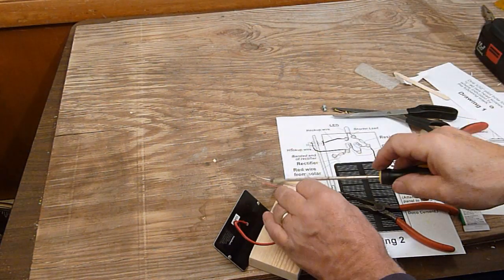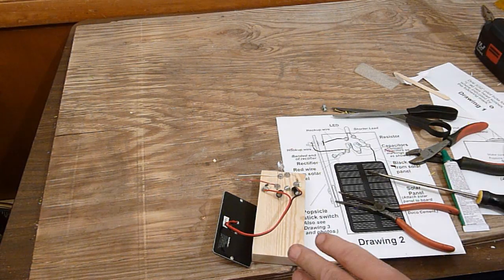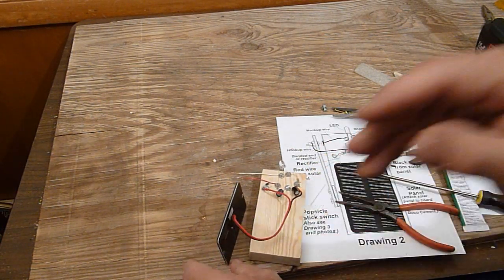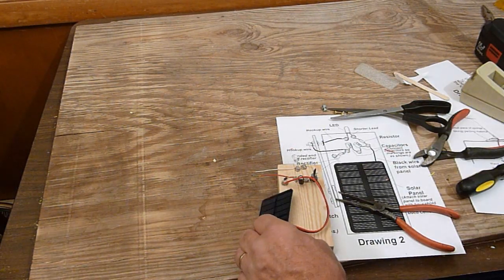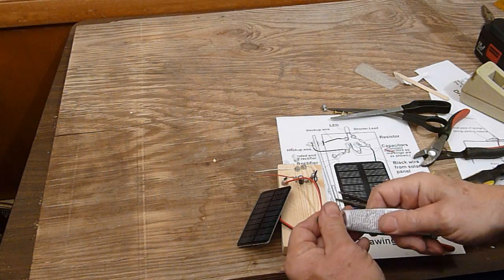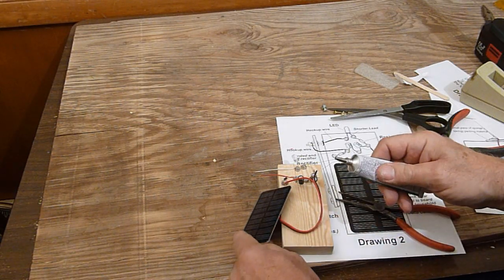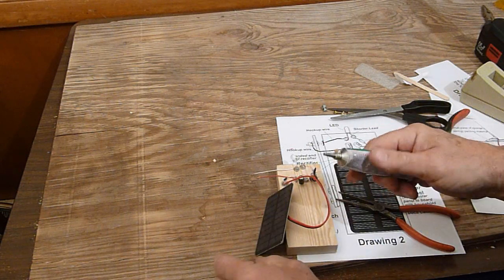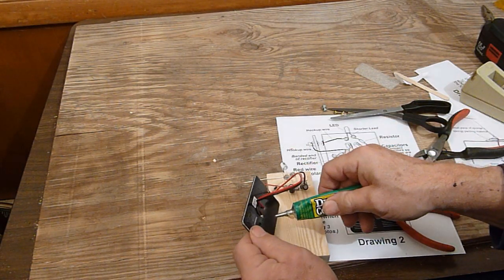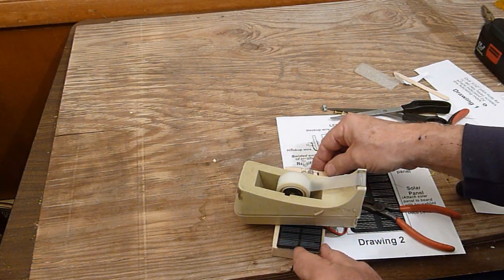The wiring is done except for this popsicle stick switch. Now, we're going to glue, cement this down to the board. I've made this solar powered flashlight before and I did find this general purpose duco cement did work quite well. Now, of course, we will have to wait until it dries.